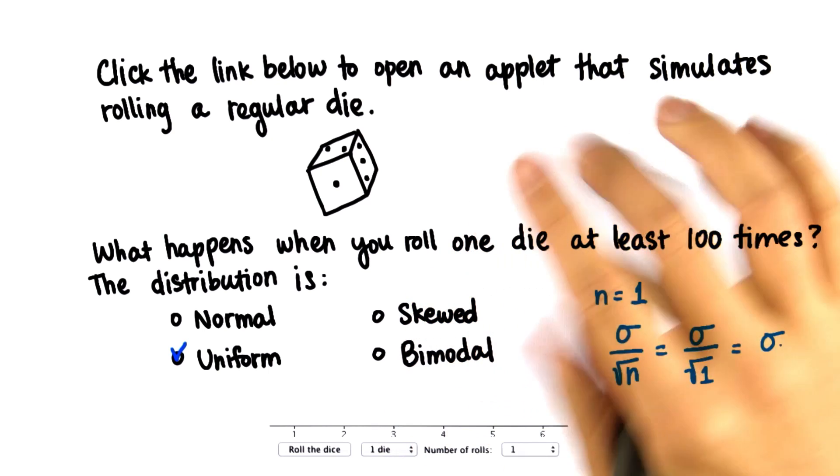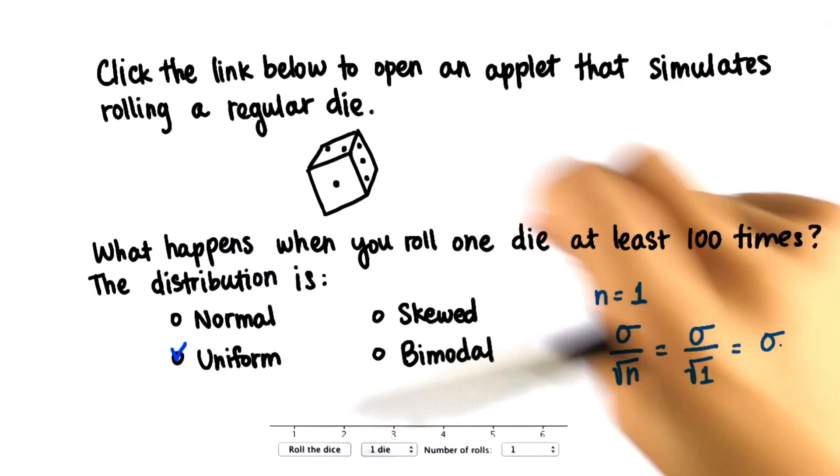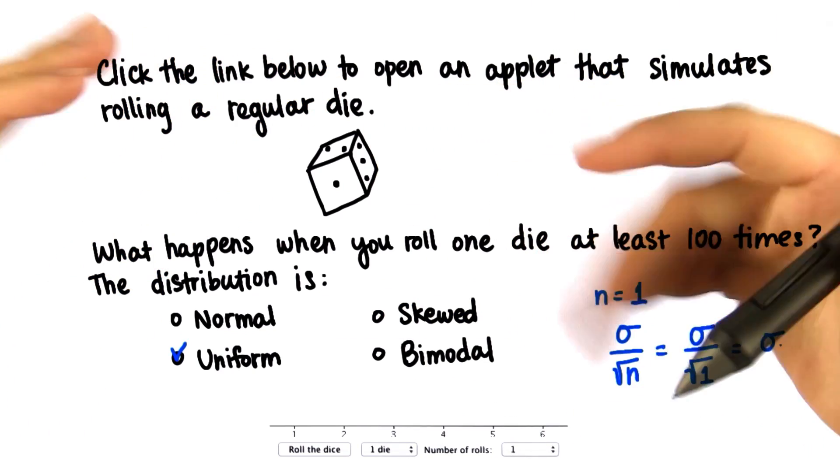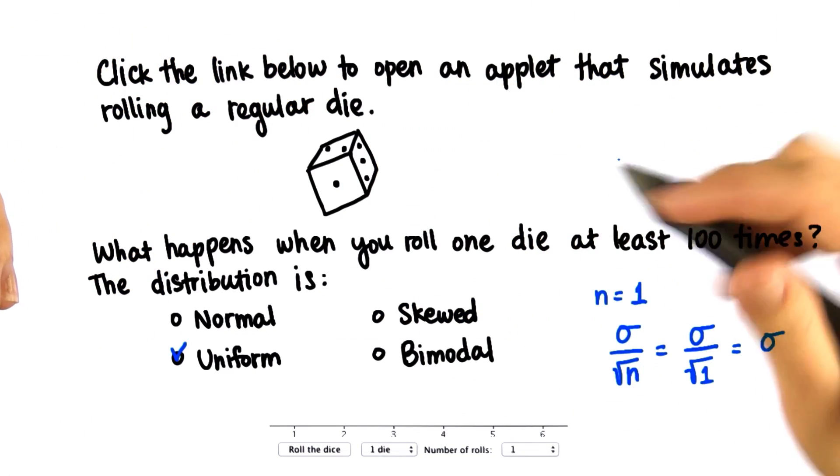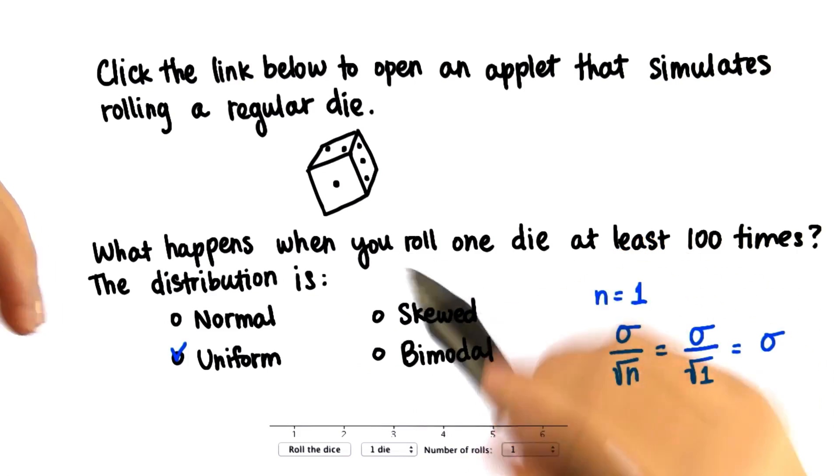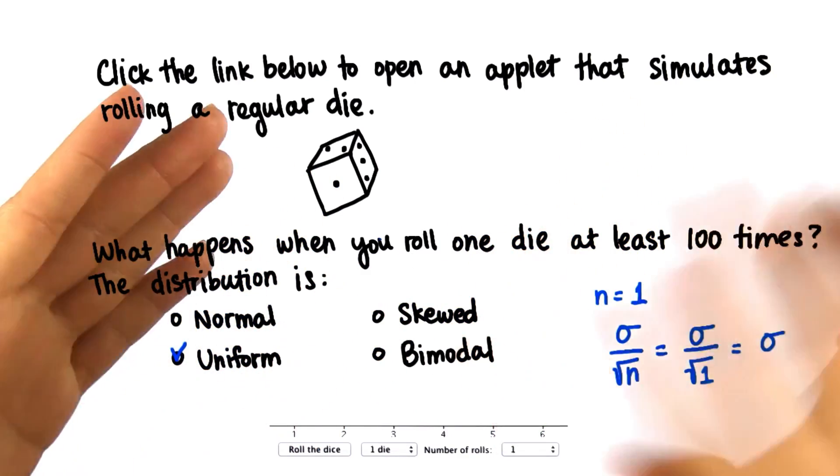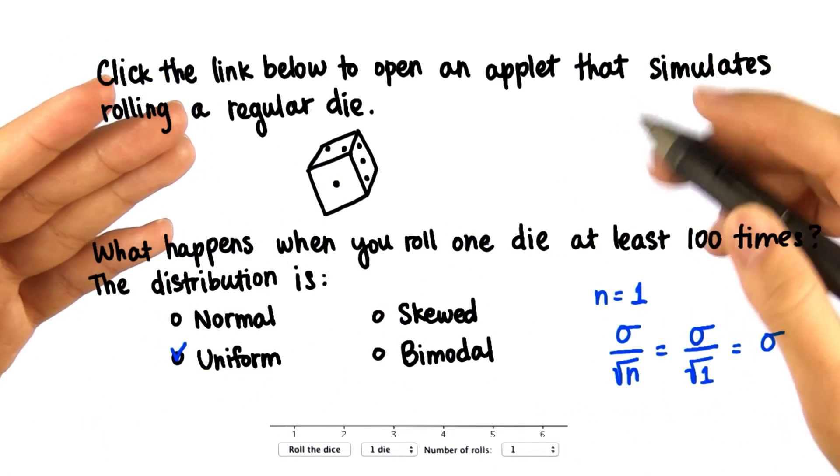So when we're taking samples of size one, we're just drawing members of the actual population. And so then when we graph our distribution of sample means, we're really just graphing our actual population.